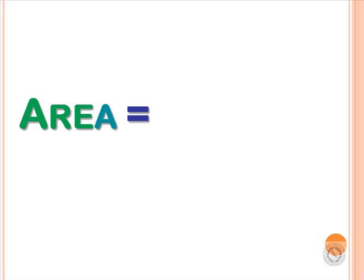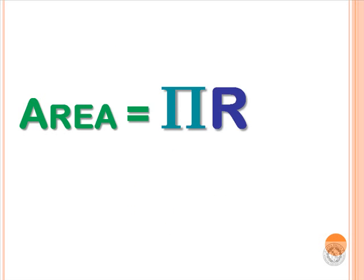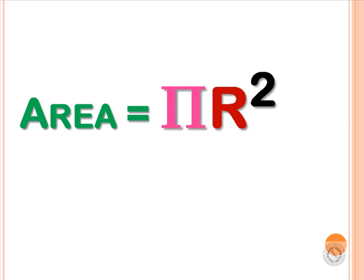Area is pi R squared. The diameter is twice the radius.